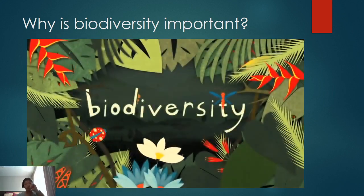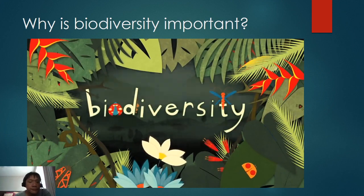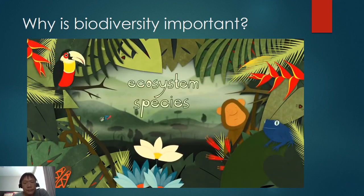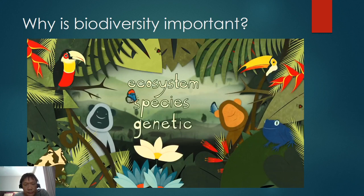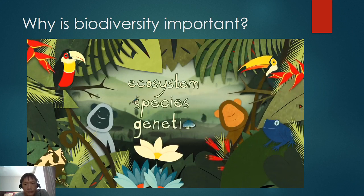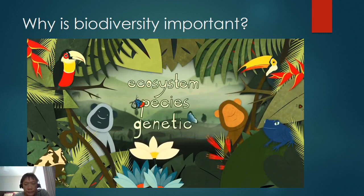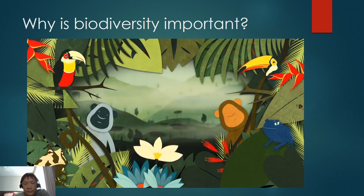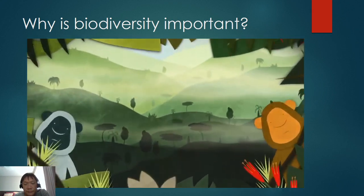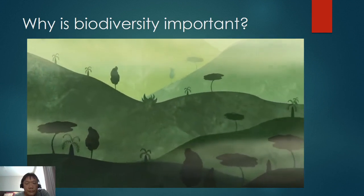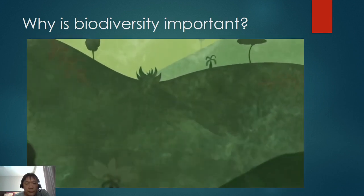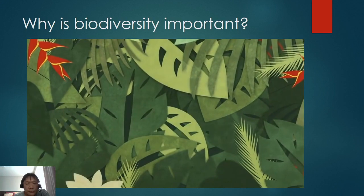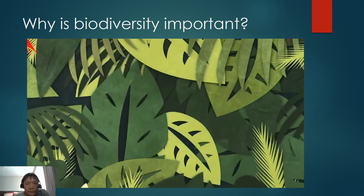Biodiversity is built out of three intertwined features: ecosystem diversity, species diversity, and genetic diversity. The more intertwining there is between these features, the denser and more resilient the weave becomes. Take the Amazon rainforest, one of the most biodiverse regions on Earth, due to its complex ecosystems, huge mix of species, and the genetic variety within those species.